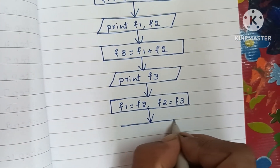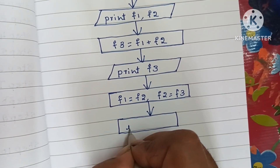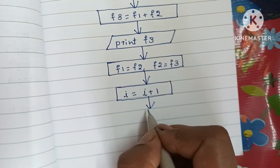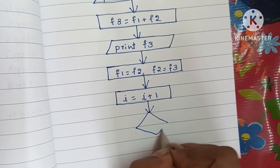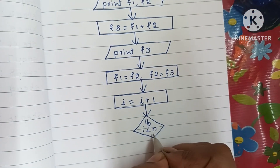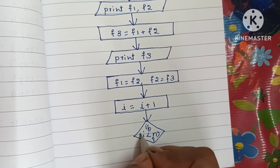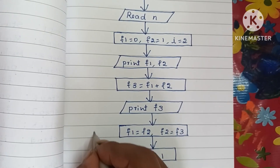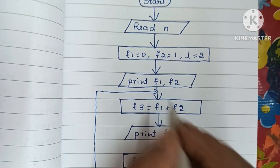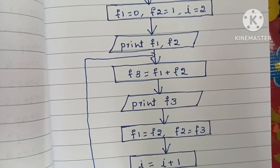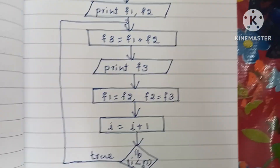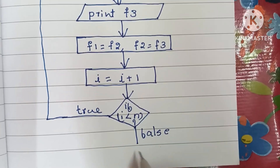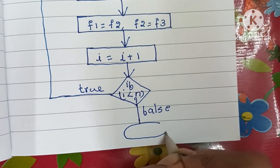Next we increase the value of I — initially two — by writing I equals I plus one. Then we check the condition: if I is less than N, we loop back to calculate F3 again. If this condition is false, meaning I is greater than or equal to N, we stop the flowchart using the stop statement in an oval shape.